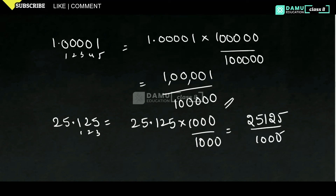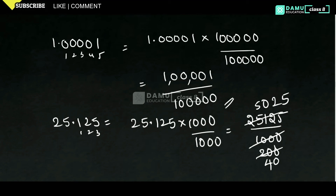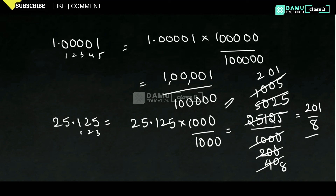If you divide with 5, step by step through the calculation, 25125 divided by 1000 simplifies. Dividing numerator and denominator by 5 repeatedly, what you will get is 201 by 8. That is our answer.